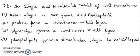Second question: in the Singer and Nicholson model of cell membrane — first, the upper layer is non-polar and hydrophilic; second, proteins form a continuous middle layer; third, glycocalyx forms a continuous middle layer; fourth, phospholipids form a bimolecular layer in the middle part.